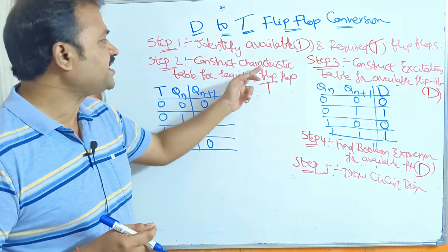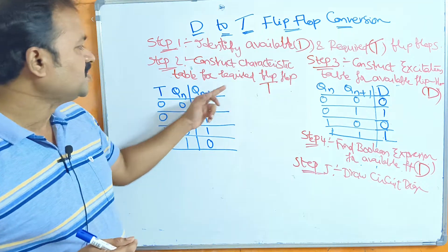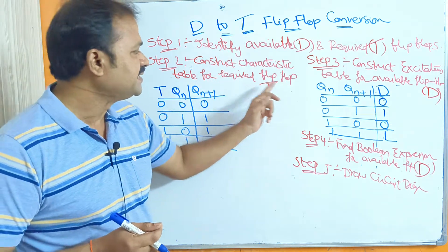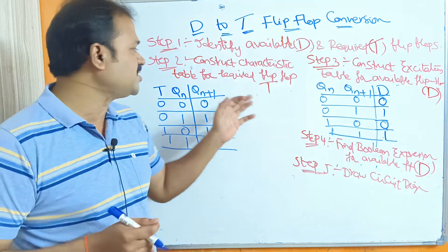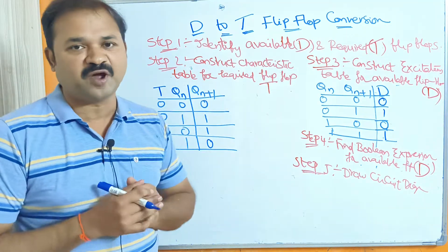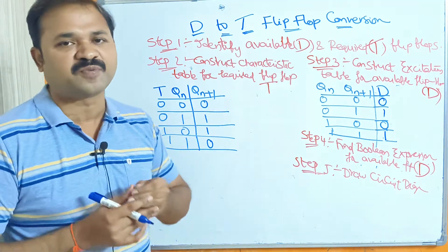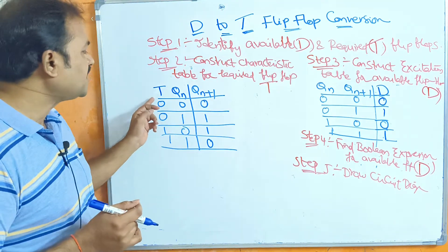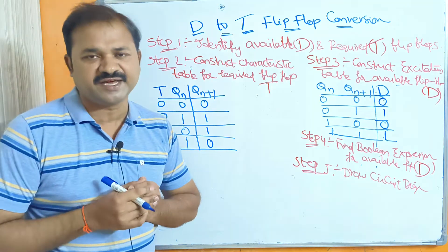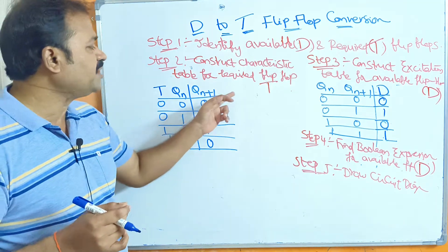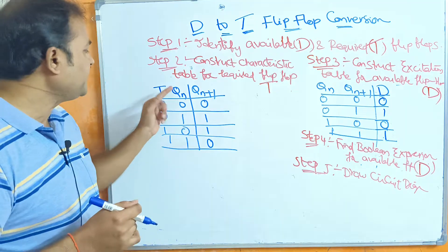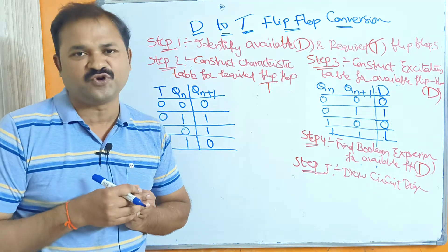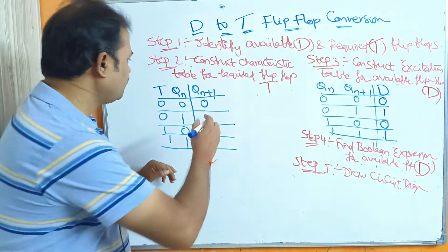Step 2 is to construct the characteristic table for the required flip-flop. Since the required flip-flop is the T flip-flop, we construct its characteristic table. The inputs are T and Qn, and the output is Qn+1. Since we have 2 inputs, there are 2² = 4 combinations: 00, 01, 10, 11.